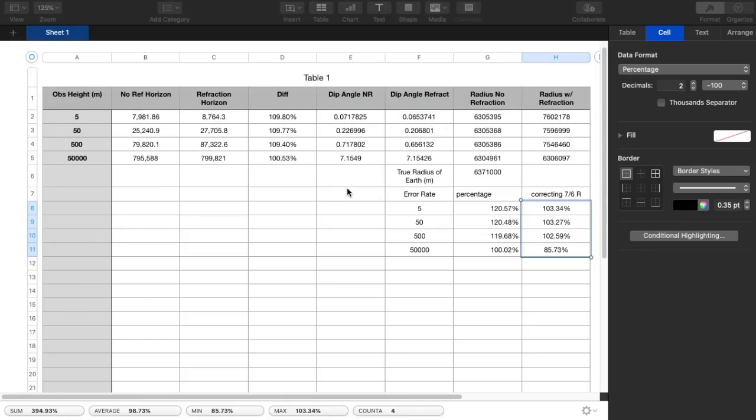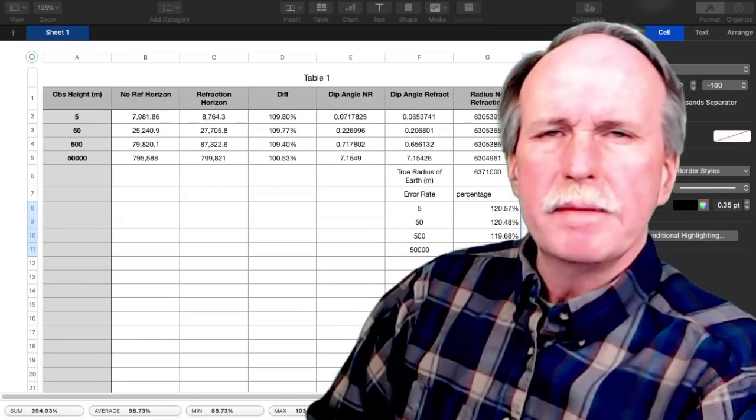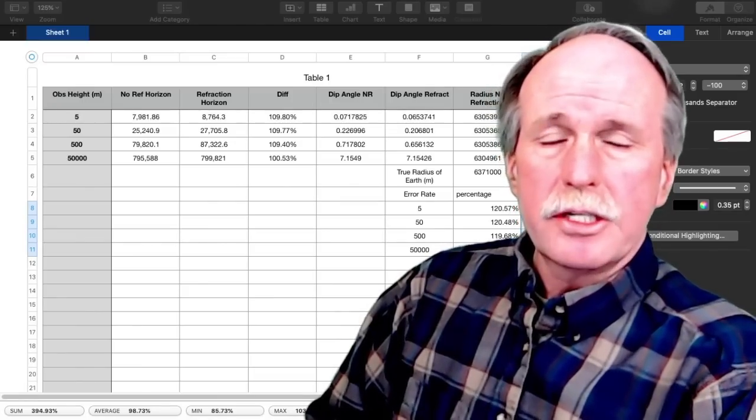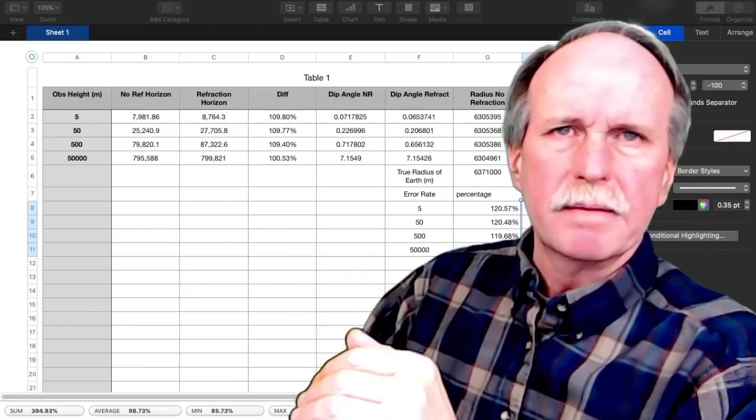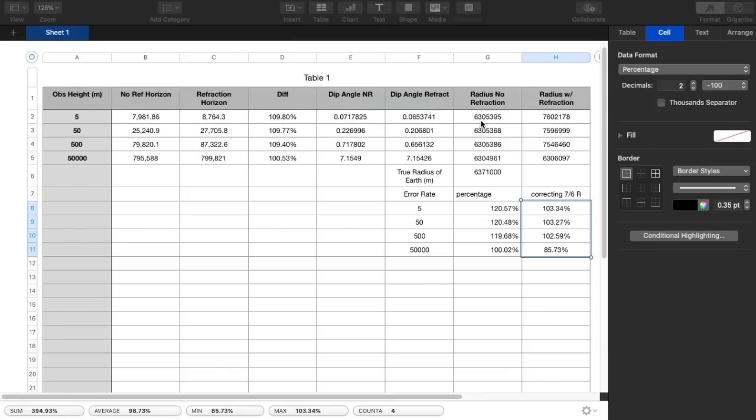Now, let's have a look at the dip angles. For both the no refraction and the refraction, notice it starts off at a very, very tiny little angle. And as you go higher, it goes up by a factor of 100. Let's apply the Al-Biruni formula to these dip angles. Recall that my program uses cosine and radians. And the way that you convert degrees to radians is you divide the number of degrees by 57. That's not the exact number, but I just used 57 to kind of round it a little bit. With no refraction at 5 meters, I got 6,305,395 meters for the radius of the earth. With refraction, I got 7,602,178. If you look right down here, the difference is about 20.57%.